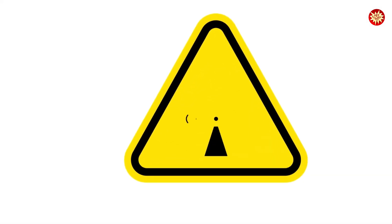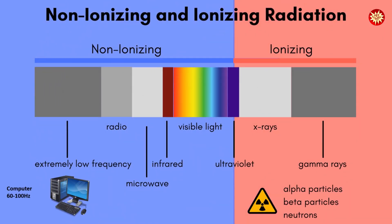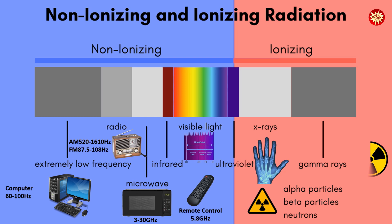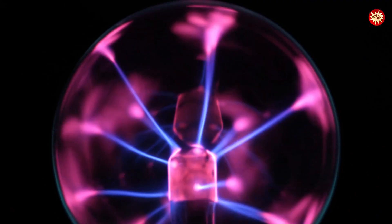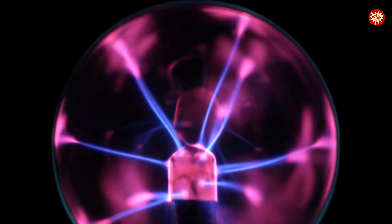Non-ionizing radiation safety signs are crucial in alerting us to the presence of various electromagnetic radiation sources. From UV light to microwaves and radio waves, these signs serve as a reminder of potential exposure risks. Remember, non-ionizing radiation may not ionize atoms, but it's essential to be cautious around these sources.